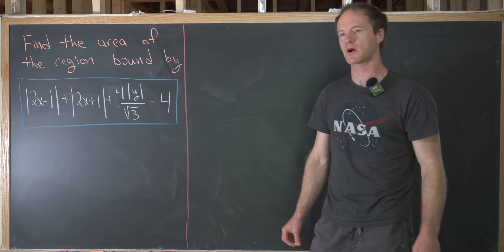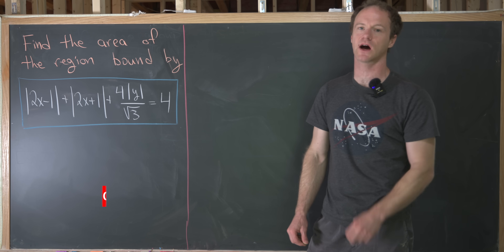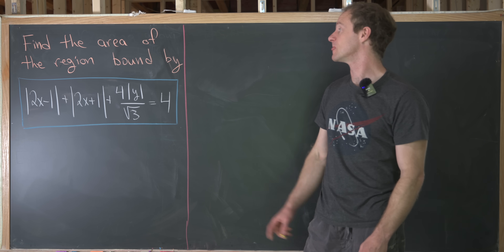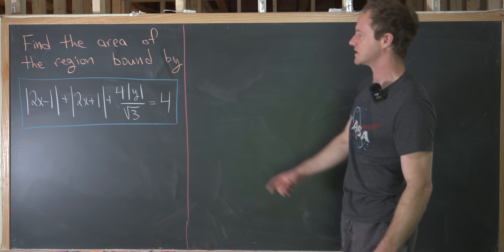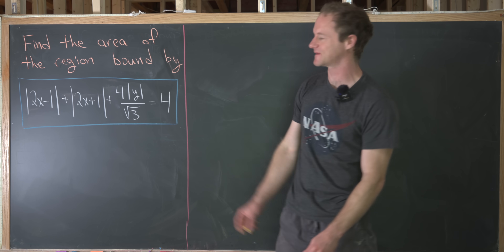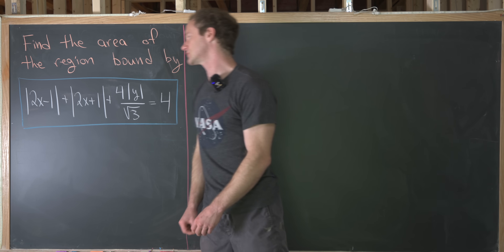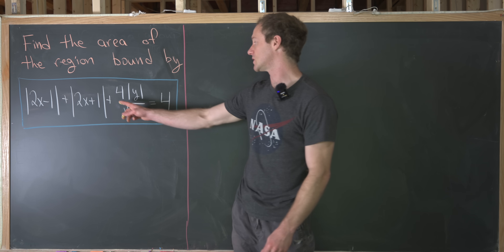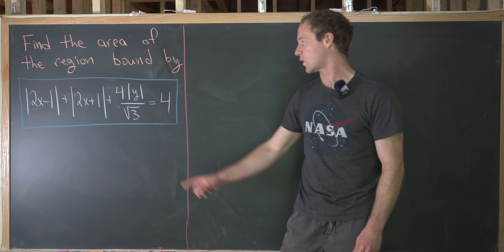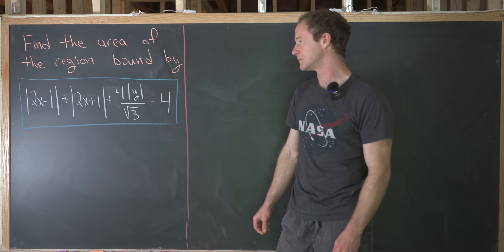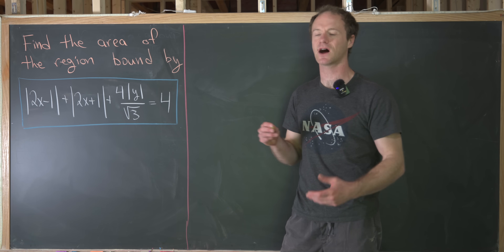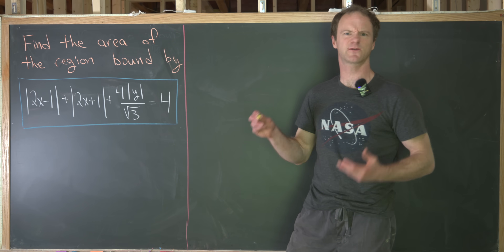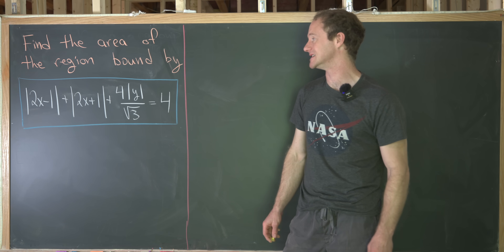I've got a nice little analytic geometry problem for you today that really looks a lot harder than it is. But still, I think it has a pretty interesting solution, so we're going to look at it. We want to find the area of the region bound by the curve defined like this: the absolute value of (2x − 1) plus the absolute value of (2x + 1) plus 4 times the absolute value of y over the square root of 3 equals 4. This comes from a college math contest among a couple of colleges in Indiana called the Friendly Mathematics Contest, from the 1991 edition.